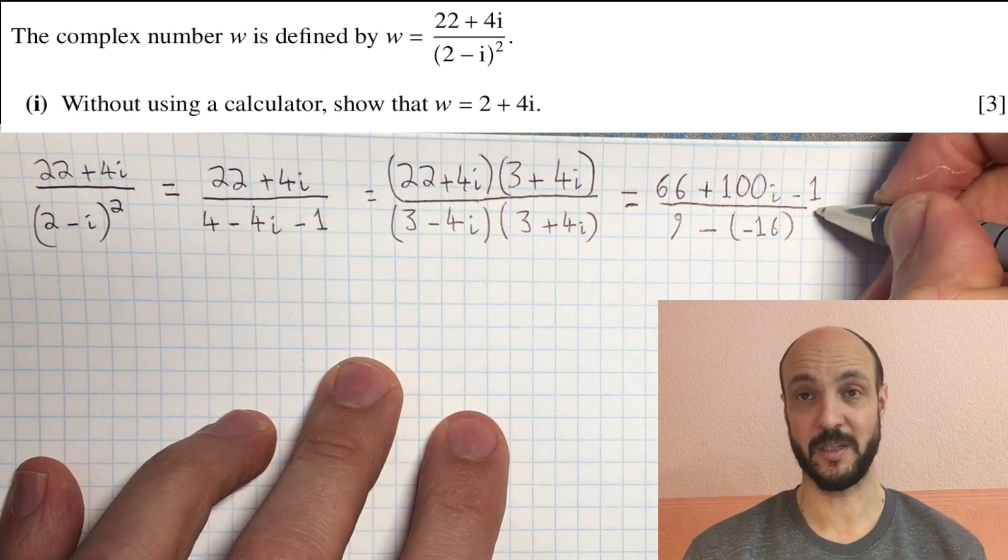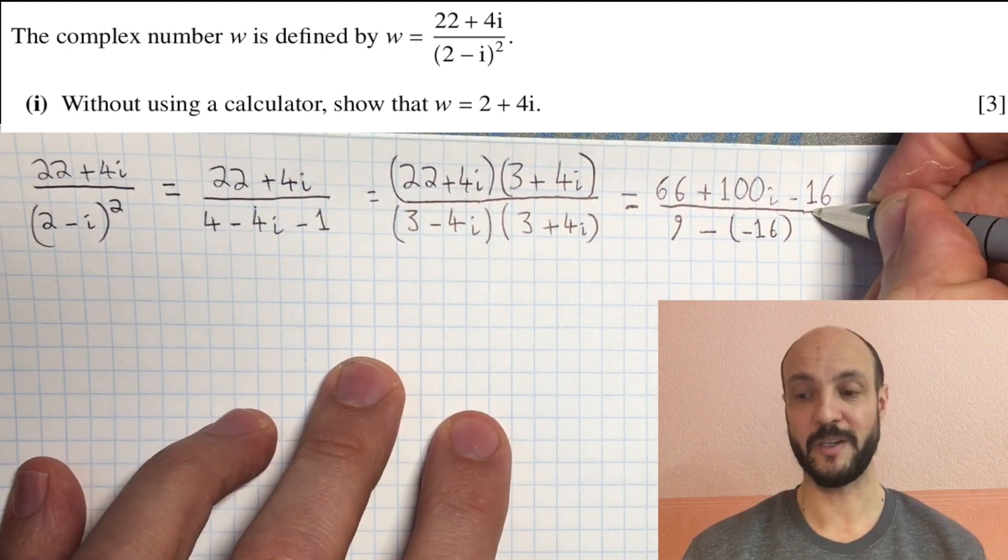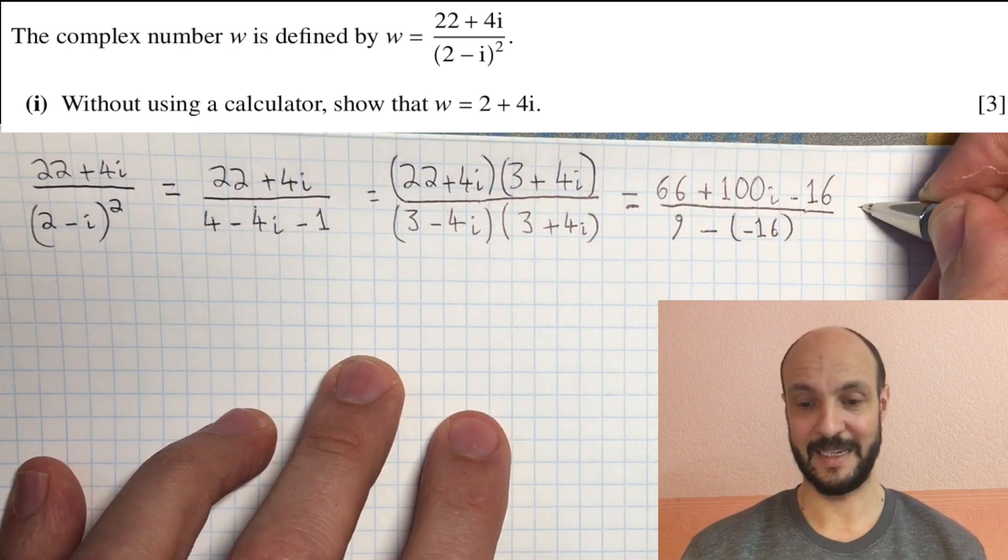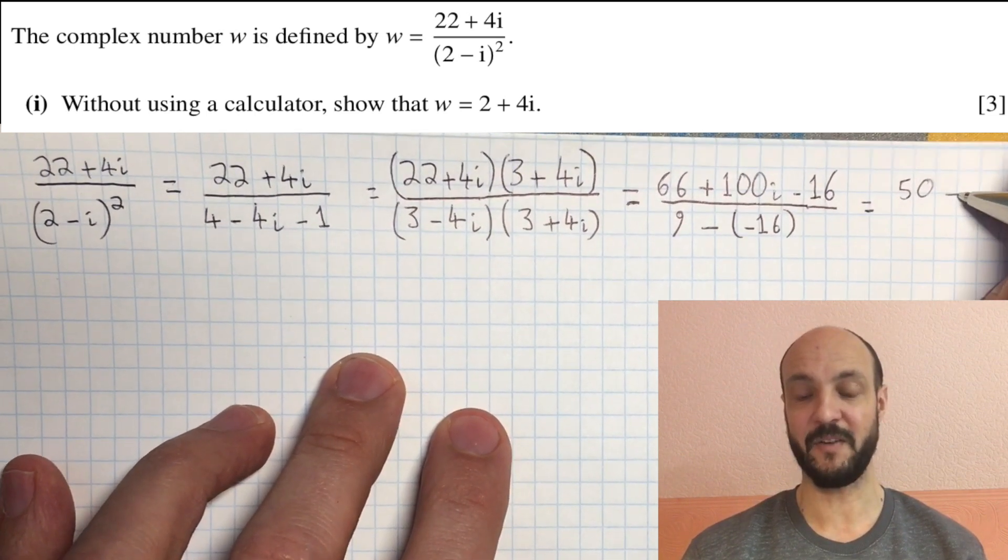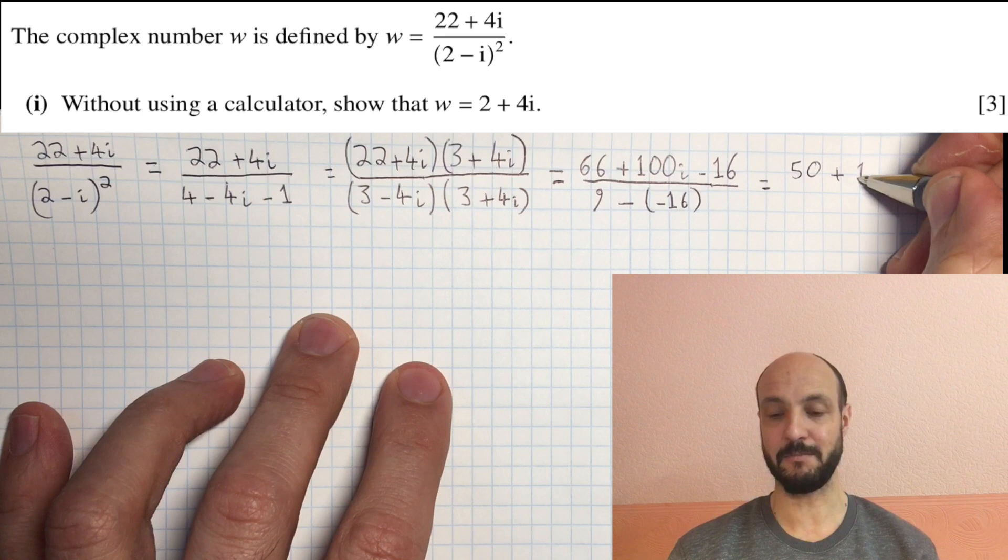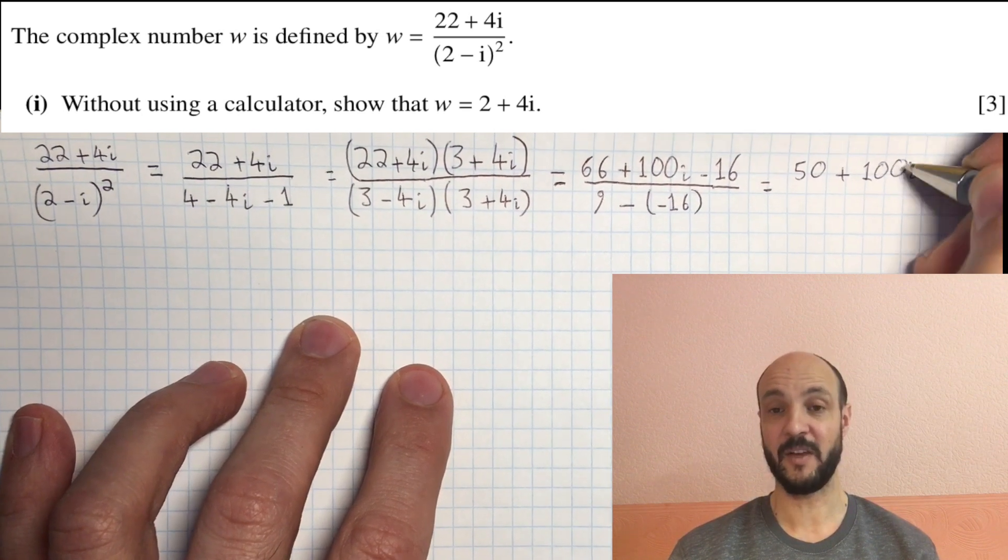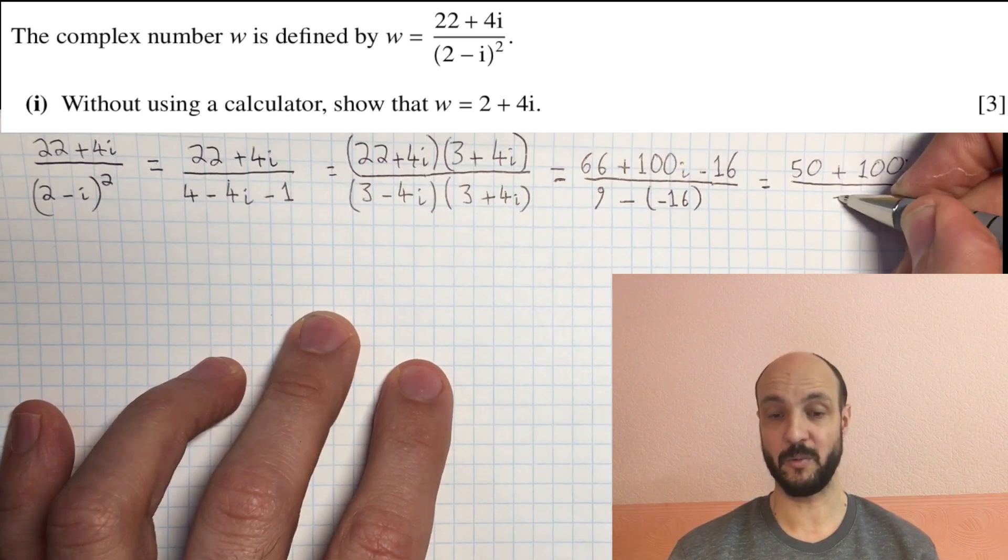So we get 66 plus 100i minus 16 over 25. Which, collecting like terms, gives us 50 plus 100i over 25. Which we can then see dividing both terms by 25, gives us the 2 plus 4i, which is what we wanted.